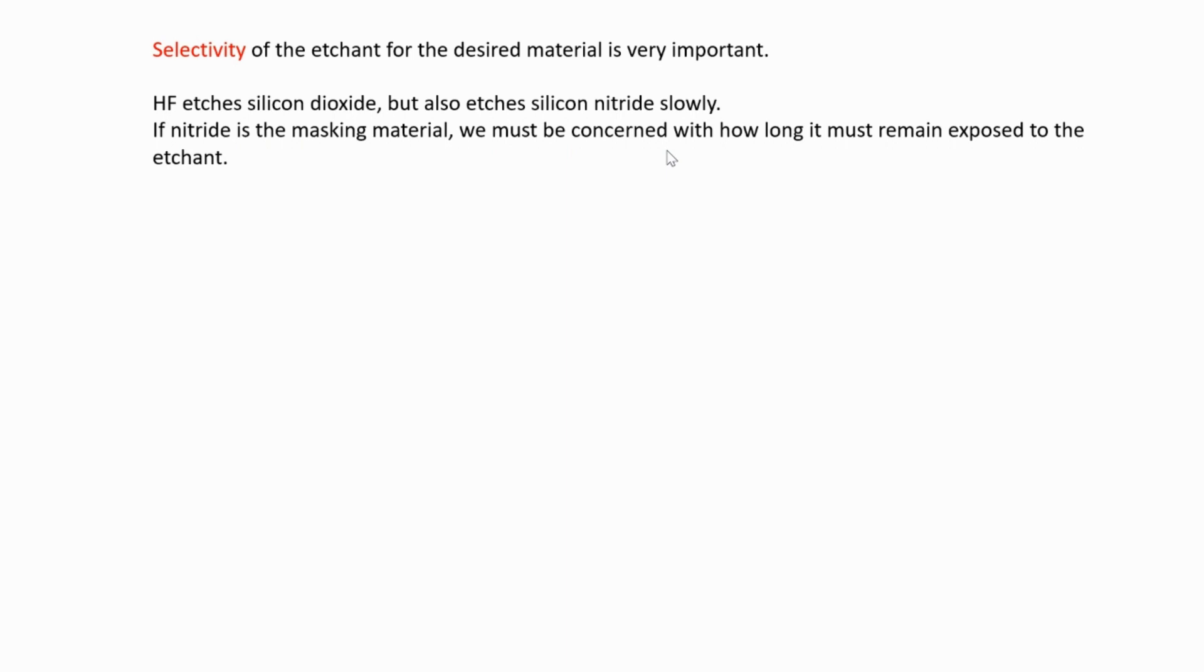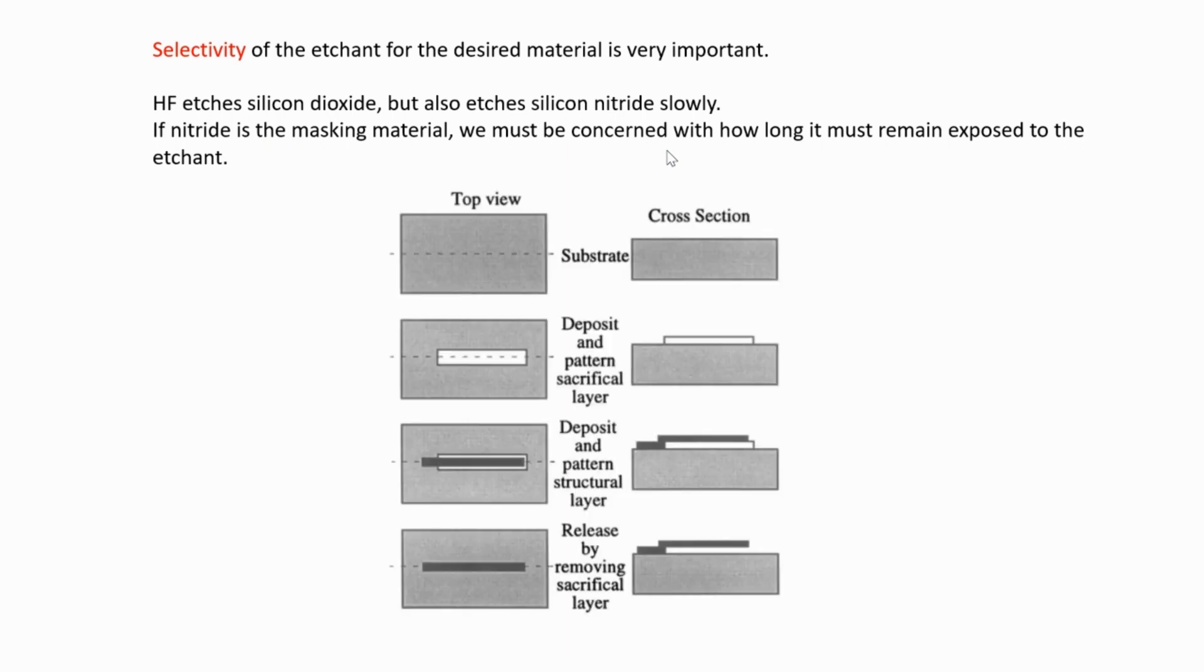Silicon nitride is a good mask if it's for a very short time, but if it's for a long time then it's not a good mask - you have to look for another one. Your etchant should selectively etch only the particular material, not your mask, and you should choose your mask based on that.